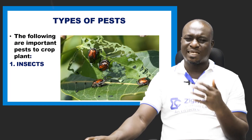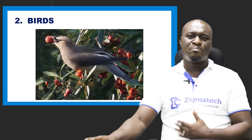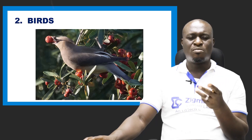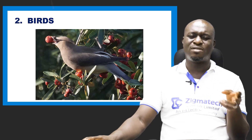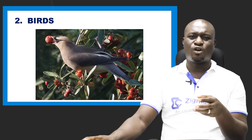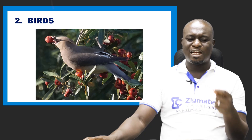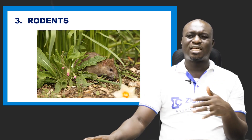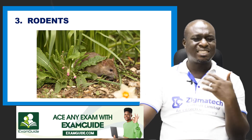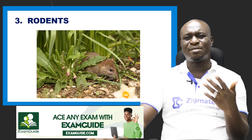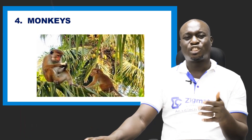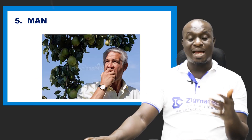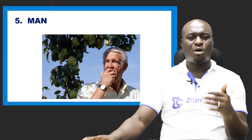Apart from insects as a type of pest, we also have birds. Birds go around feeding from plants and damaging crops — they damage crops a lot, feeding on the fruits and many other things from the crops, and in so doing end up damaging the plant. Number three is rodents, mostly found in farmlands, going around eating and feeding on these crops. We also have other types of pests: monkeys, which are very good at damaging crops and feeding on their fruits and produce. And then we also have man — so man can also be an example of a pest.